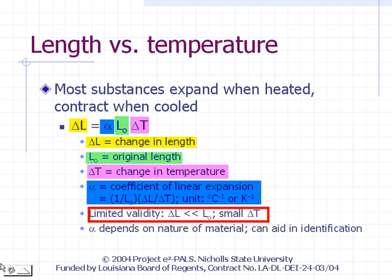Calculations involving alpha can have very useful applications. For example, it could be used in determining the strength of concrete structures. Since alpha depends on the nature of the material being heated, it can also be used as an aid in identification of an unknown.